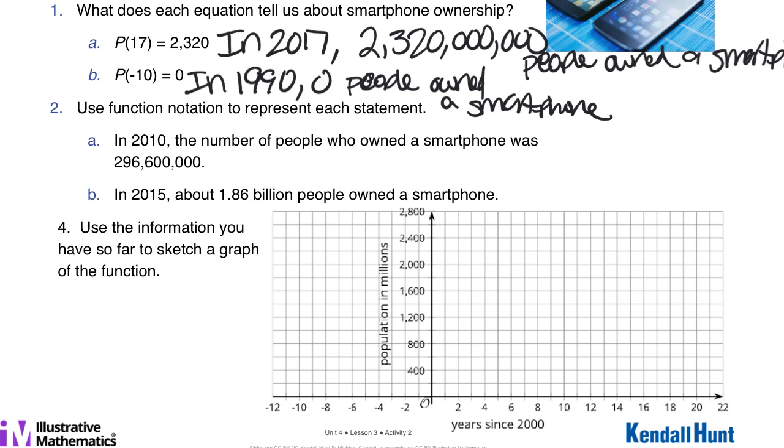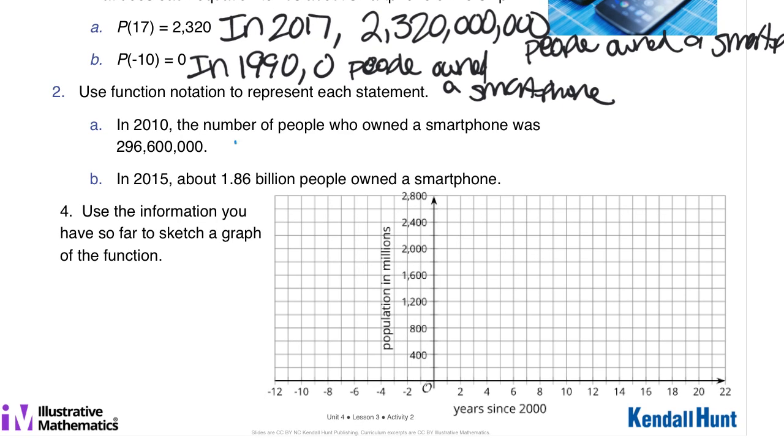In number 2, now we're going to use function notation. So A says in 2010, so we're still talking about the function p, so p of 2010 would be 10 years after the year 2000. The number of people who owned a smartphone was this many million. So we're going to say 296.6 million.